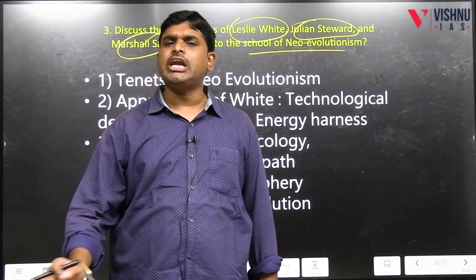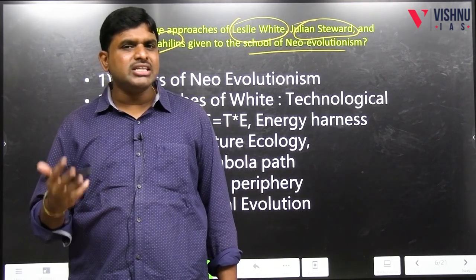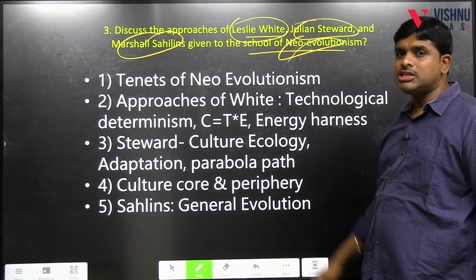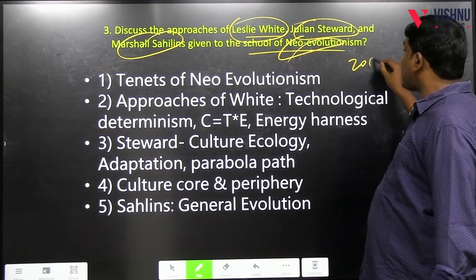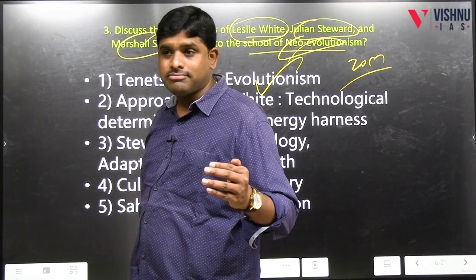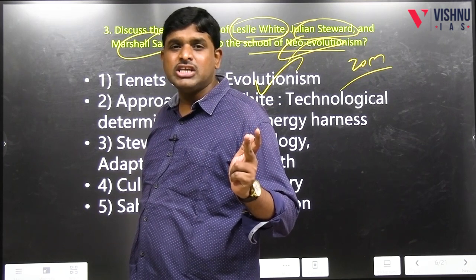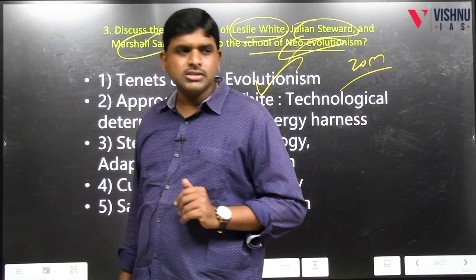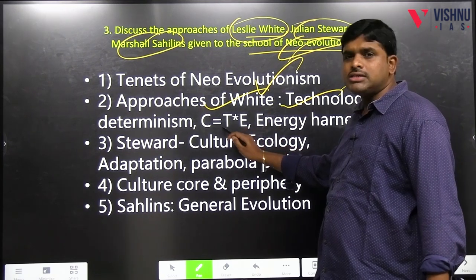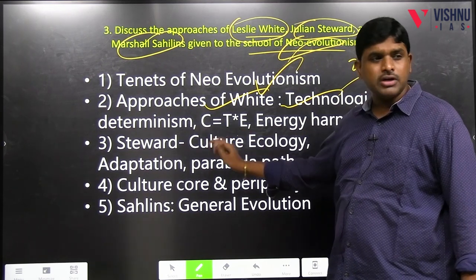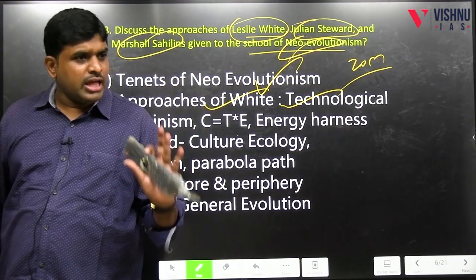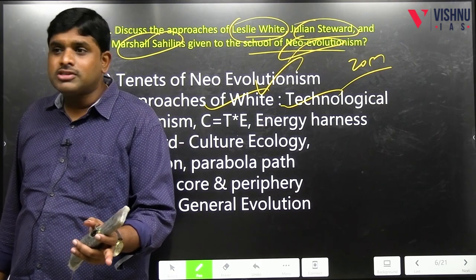There are five anthropologists associated with Neo-Evolutionism: Gordon Childe, Leslie White, Julian Steward, Sahlins and Service. First heading is Leslie White — it is a 20-marker. Tenets of Neo-Evolutionism: evolution is progressive; evolution depends upon energy harnessed and technology evolved. Approach of Leslie White: technology determinism — C = T × E. Technology is directly proportional to culture; energy harnessed is directly proportional to culture. The evolution is unilineal and that unilineal evolution is universal — everywhere the same.